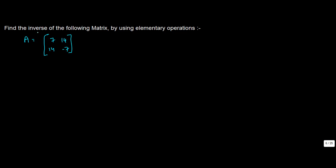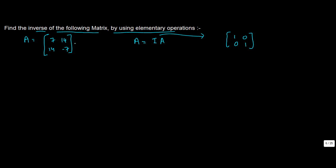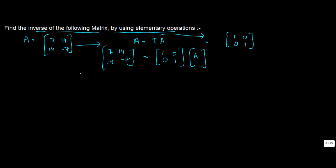In this question, you've been asked to find the inverse of the following matrix by using elementary operations. A is equal to [[7, 14], [14, -7]]. To do that, we apply operations to the various rows and columns to achieve the inverse. We write this as A = IA, where I refers to the identity matrix of the same order. Substituting the values: [[7, 14], [14, -7]] = [[1, 0], [0, 1]] * A.